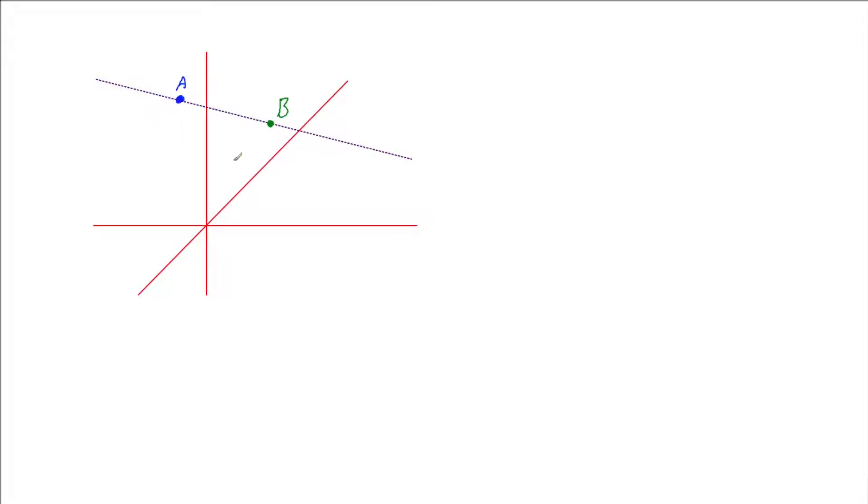Hi, in this video I'm looking at deriving the vector and Cartesian equations for a straight line passing through two points in three dimensions.